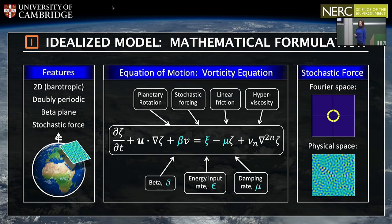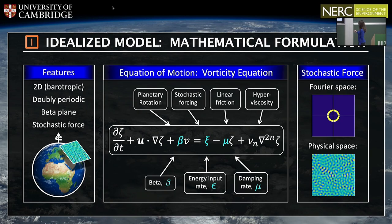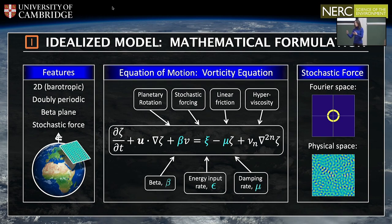There are three parameters in this system: beta, the background gradient of potential vorticity; epsilon, the energy injection rate due to the forcing; and mu, the damping rate. The stochastic forcing is white noise in time, and I'm forcing the system both isotropically and homogeneously — forcing a narrow annulus of wave vectors in Fourier space with randomised phases at each k and at every time step. This corresponds to small-scale forcing in physical space.